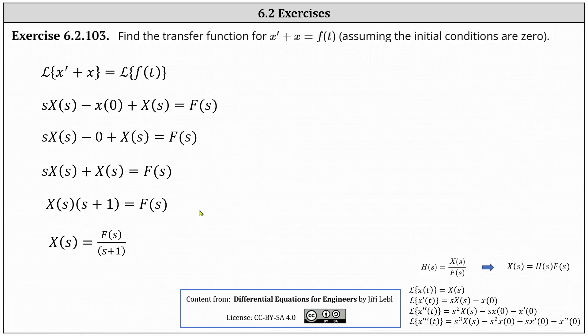We have big X of s equals big F of s divided by the quantity s plus one, and now we can determine the transfer function big H of s. Again, big H of s is equal to big X of s divided by big F of s,